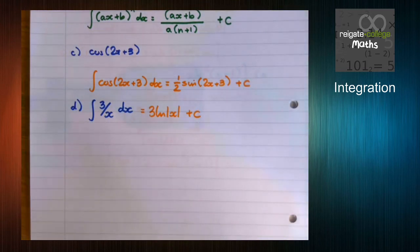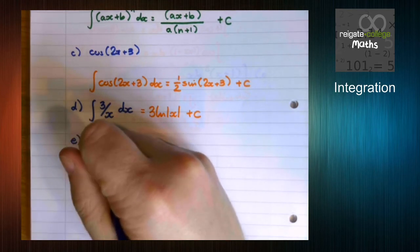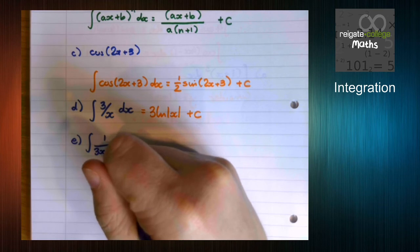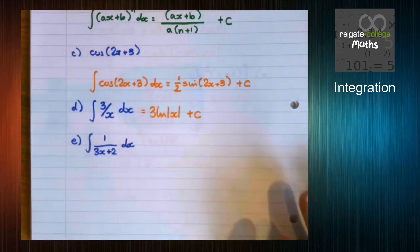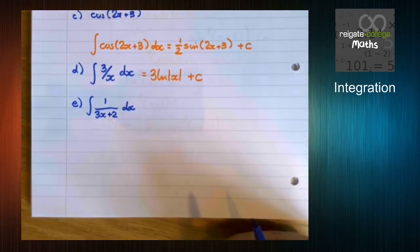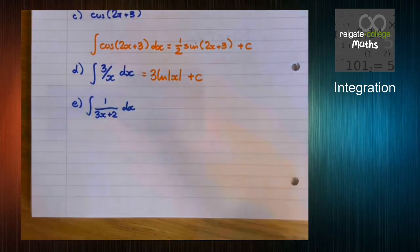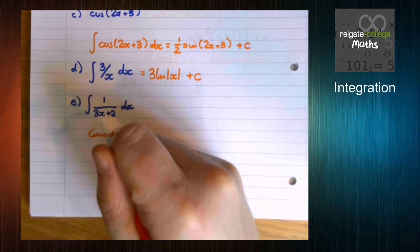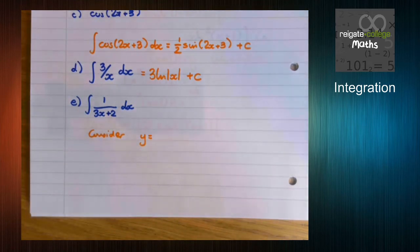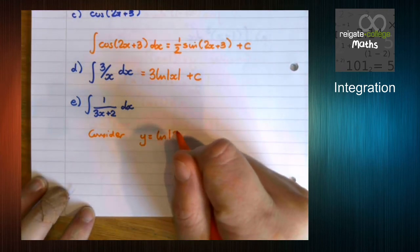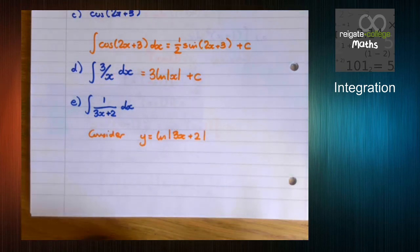The last one, a little bit more tricky. We've got 1 over 3x plus 2. So it's 1 over something, which generally means it's going to involve a ln in some way. So we need to consider something that could differentiate to give us entirely 3x plus 2 on the bottom. Now, we haven't really looked at functions of this type, but what do you think could work? If you said ln of 3x plus 2, you'd be in the right ballpark.